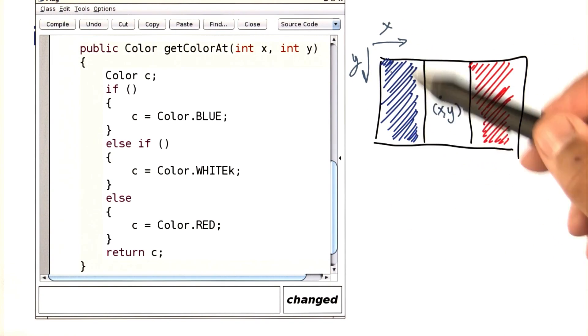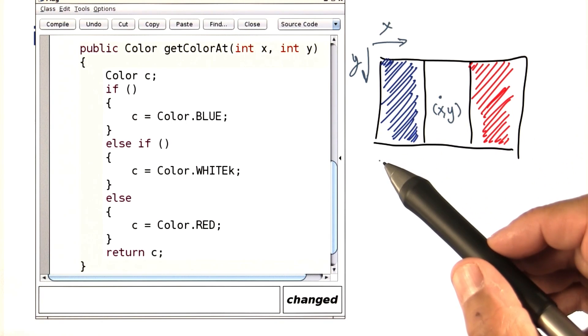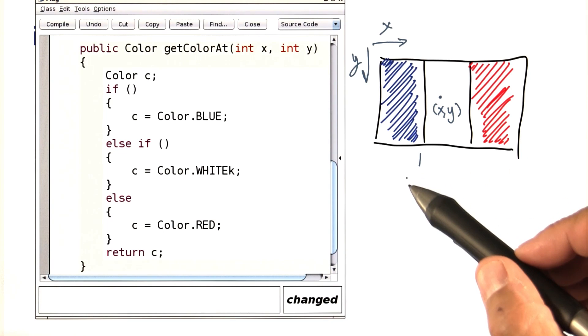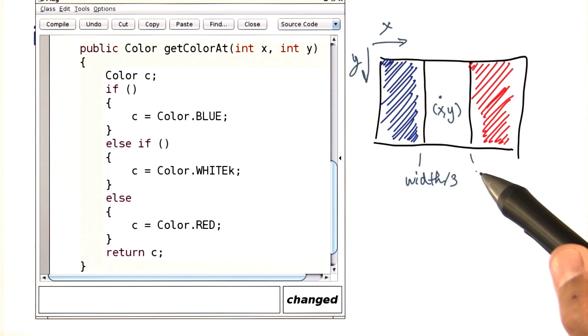So, in this case, the y value doesn't matter at all. What matters is where x is. The total width here is given to us, so this cutoff here is width over 3, and this one is width times 2 over 3.